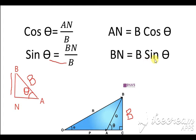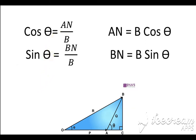From the same triangle, if we find the value of cosine: cos is adjacent divided by hypotenuse. The adjacent side here is AN, divided by hypotenuse B. So we get AN = B cos theta.